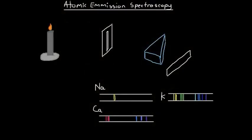Atomic emission spectroscopy is a general area where we analyze the different colors of light that get emitted when we heat or burn a sample of metal. The most basic form of atomic emission spectroscopy is the good old fashioned flame test.